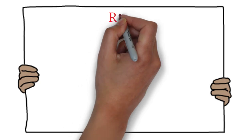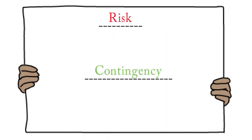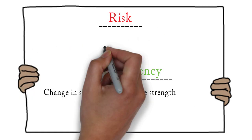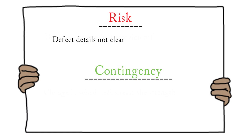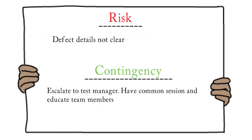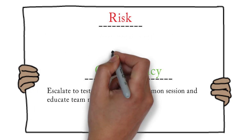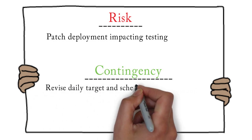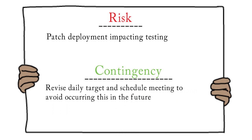Now we will take some examples of risk and see the contingency plan for those. If the sign-off for a test plan or test case is delayed, the contingency plan can be either a change in schedule or increasing the number of resources. Another example: testers are raising defects without proper defect details. This should be escalated to the test manager, who should initiate a discussion with all testers and set expectations on how defects should be raised. Another example: patch deployment is during the testing window and impacting testing. The contingency plan should be to reverse the daily target and immediately schedule a meeting with the deployment team to ensure this does not occur in the future.